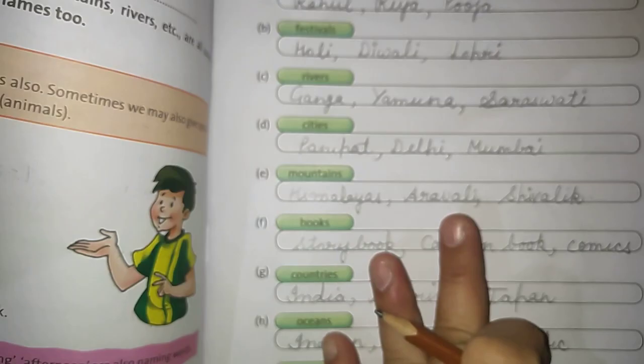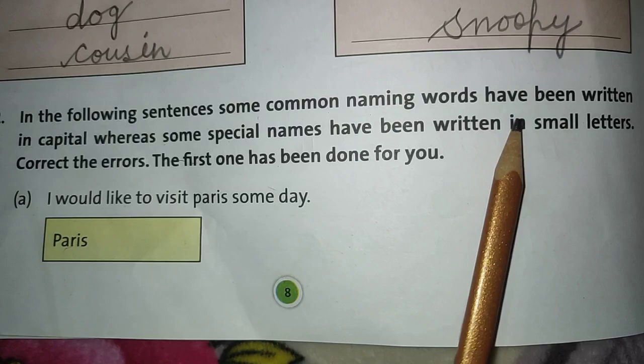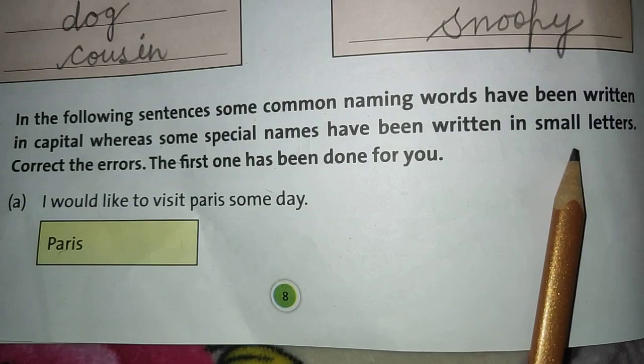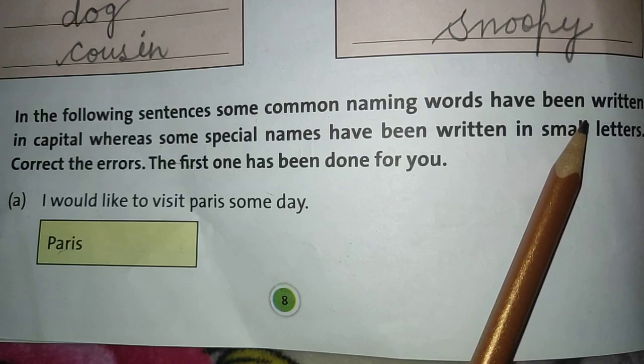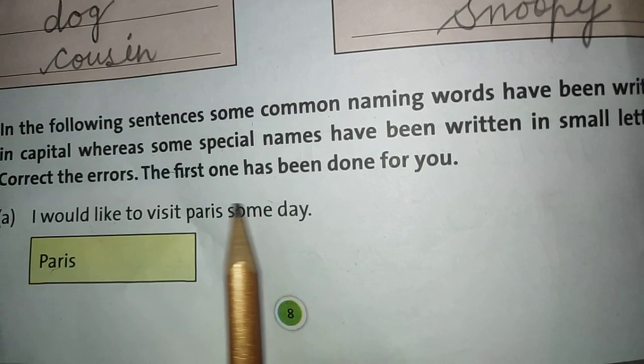And we will go to page number 8. In the following sentences, some common naming words have been written in capital, whereas some special names have been written in small letters. In this exercise, common names have capital first letters and special names have small — which is wrong. So you have to correct the errors.